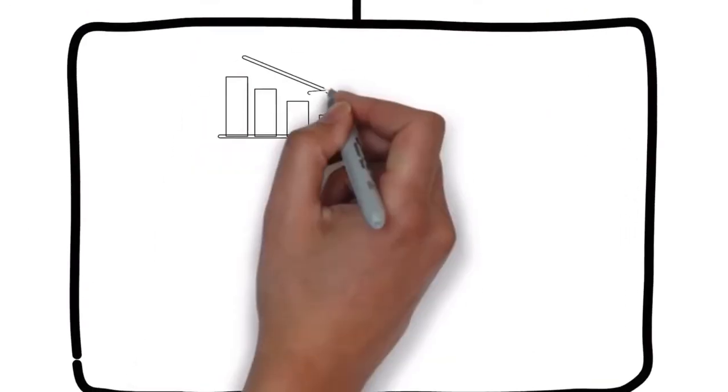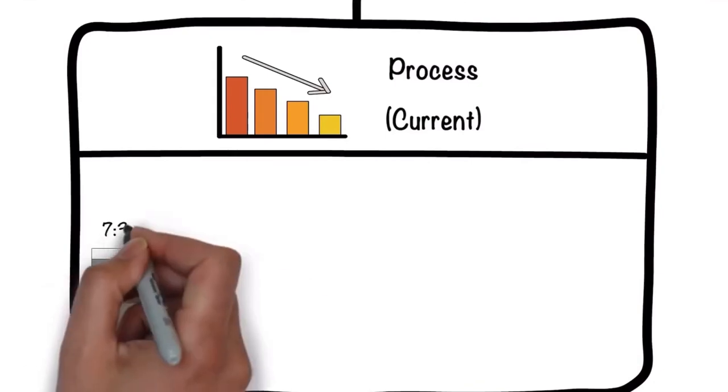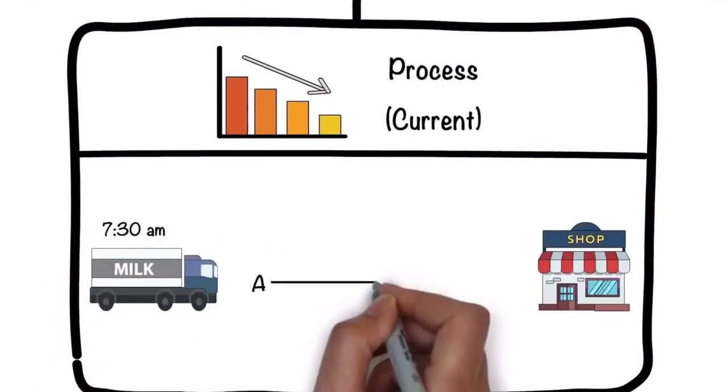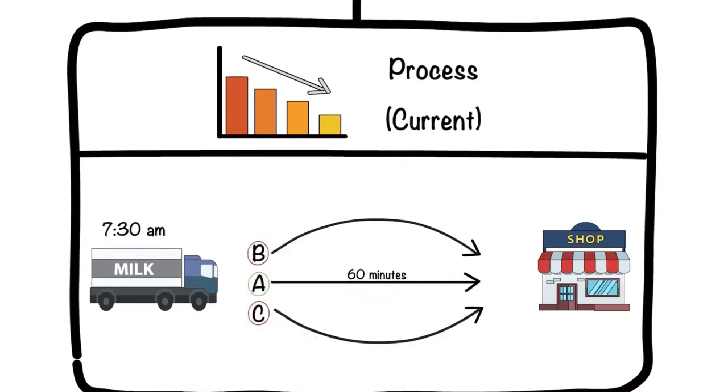In the Measure phase, you measure the performance of the current, unaltered process. The milk truck leaves at 7:30 a.m. in the morning and can take one of three routes: A, B, and C. Route A is currently the preferred one, as it takes only 60 minutes to reach the supermarket, compared to routes B and C, which take 70 and 80 minutes, respectively.